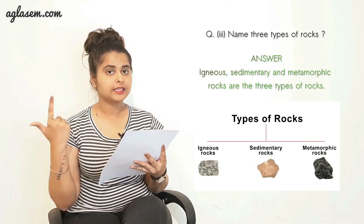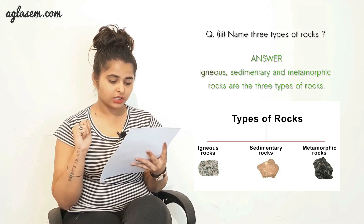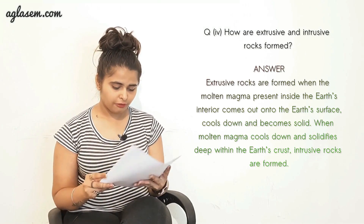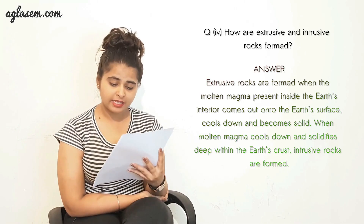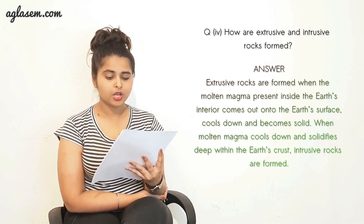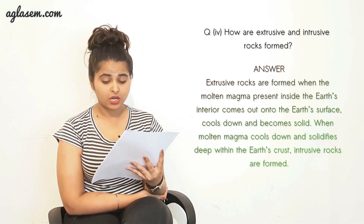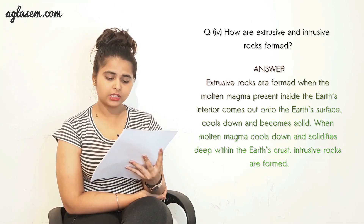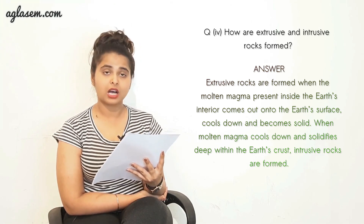Part three - Name three types of rock. Igneous, sedimentary, and metamorphic rocks are the three types of rock. Part four - How are extrusive and intrusive rocks formed? Intrusive rocks are formed when molten magma comes out onto the earth's surface, cools down, and becomes solid. When molten magma cools down and solidifies deep within the earth's crust, intrusive rocks are formed.